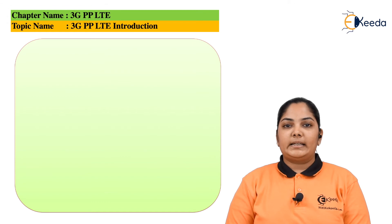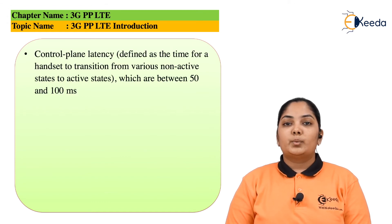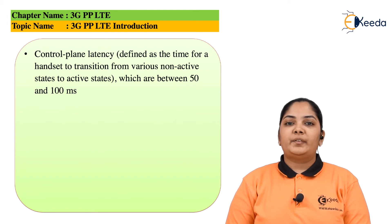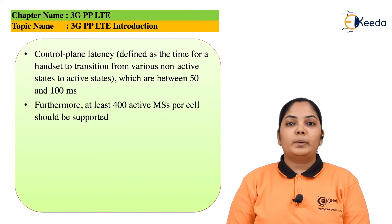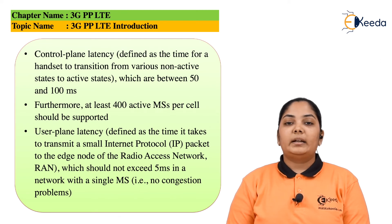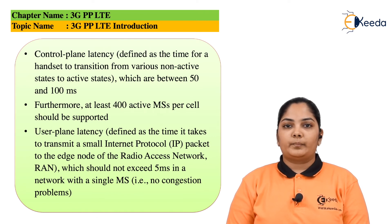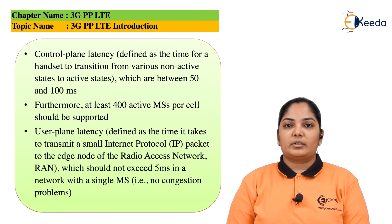Other goals of LTE include control plane latency, which is defined as the time for a handset to transition from various non-active states to the active state. This is basically between 50 and 100 milliseconds. Furthermore, at least 400 active mobile cells should be supported in a single cell. The last goal is user plane latency, defined as the time it takes to transmit a small internet protocol packet to the edge of the radio access network or RAN. This should not exceed 5 milliseconds in a network with a single mobile station, meaning there should be no problem of congestion.